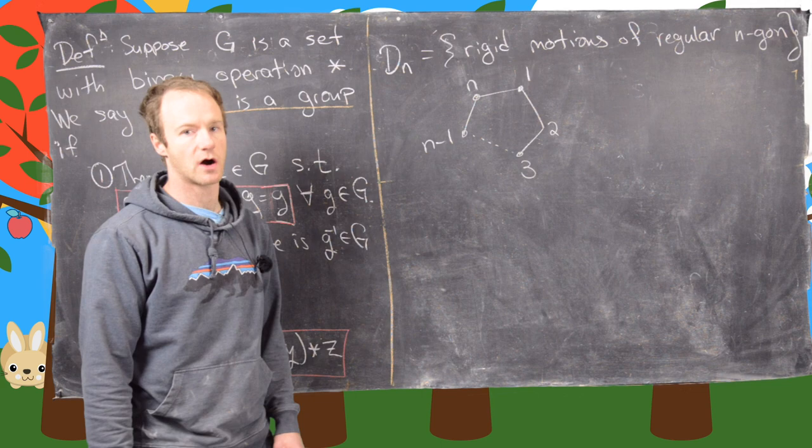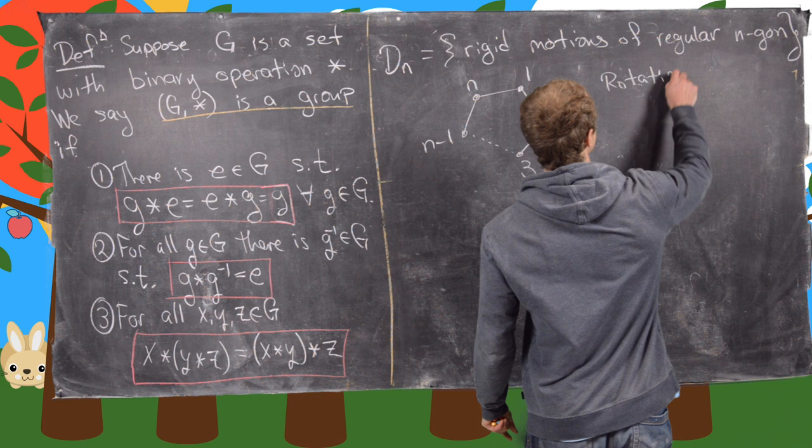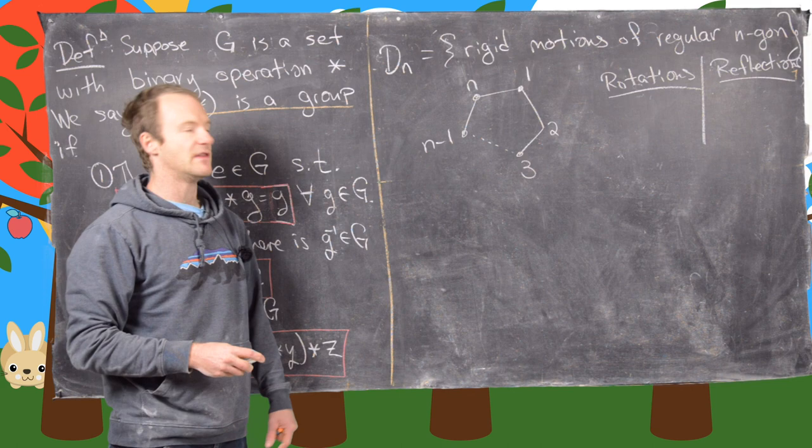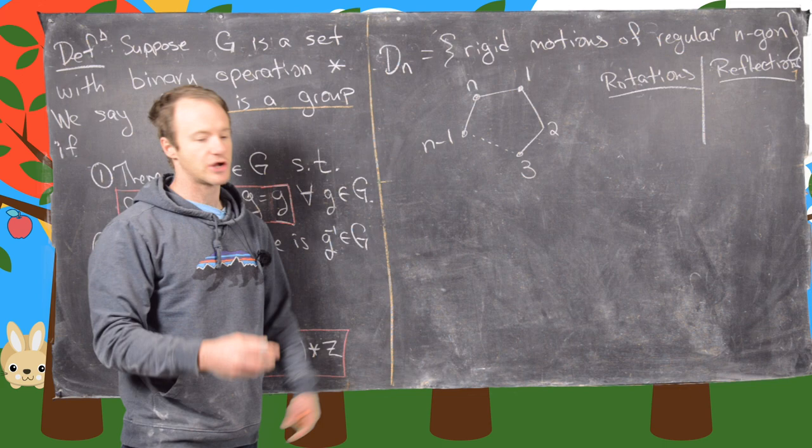Now what I want to do is look at the problem in general for an n-gon. The first thing to figure out is how many rigid motions there are, and they will break down into two categories: rotations and reflections. We can count those up and then argue that we have found all of them.